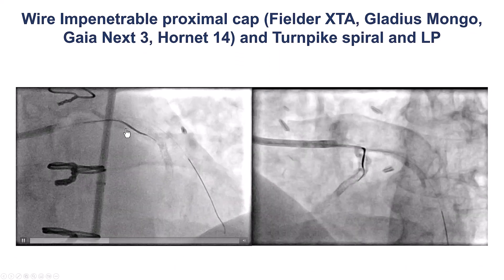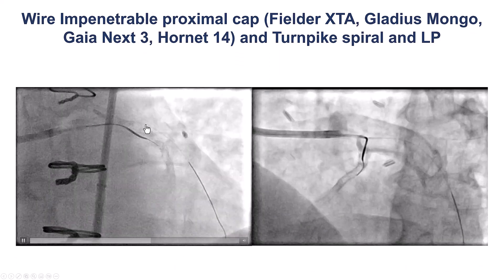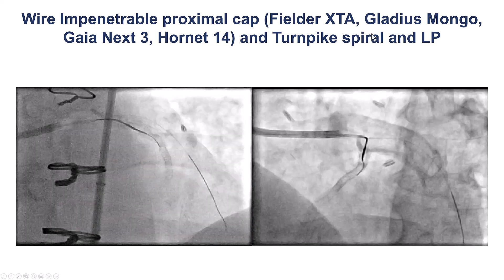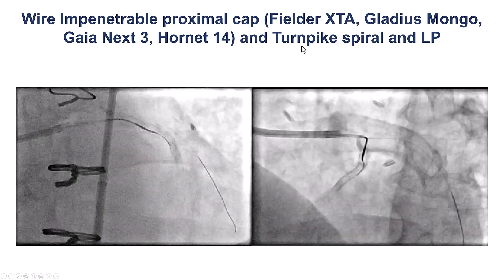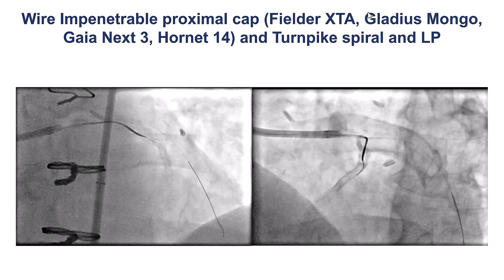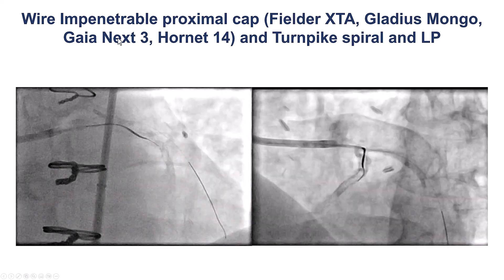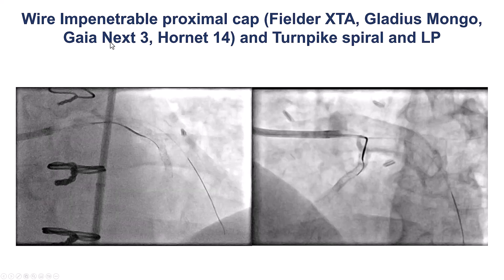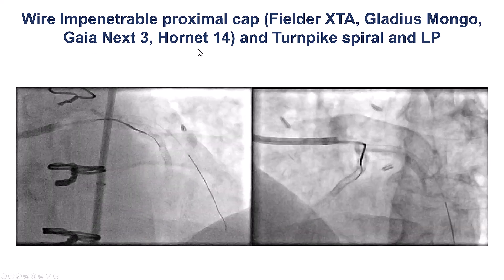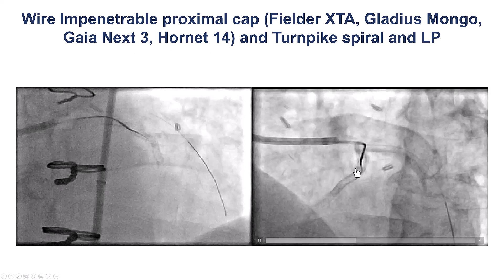Not unexpectedly, we did have significant difficulty advancing a guide wire. We used a Turnpike Spiral microcatheter and then a Turnpike LP, and several guide wires — both polymer-jacketed and high-tip-stiffness wires, including the Gaia Next 3 and Hornet 14 — but we could not make much progress.